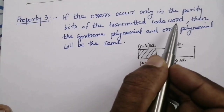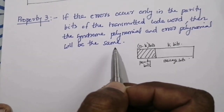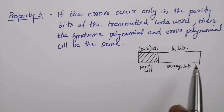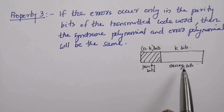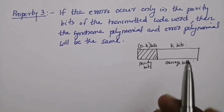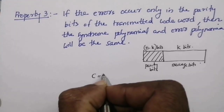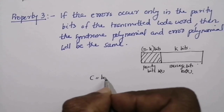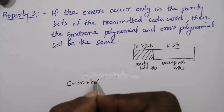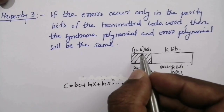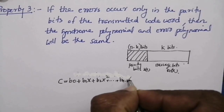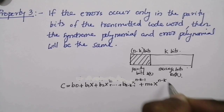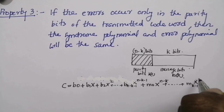Property number three: if errors occur only in the parity bits of the transmitted codeword, then the syndrome polynomial and error polynomial will be the same. This is a very important property for decoding. We know that for cyclic code the codeword format has n minus k parity bits followed by k message bits. So c(x) equals b₀ plus b₁x plus b₂x² plus etc. up to b_{n-k-1}·x^{n-k-1} for the parity part, plus m₀·x^{n-k} plus etc. plus m_{k-1}·x^{n-1} for the message part.